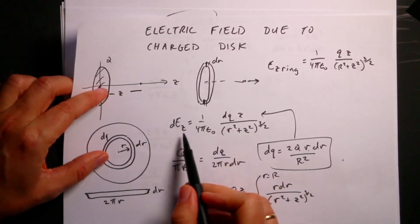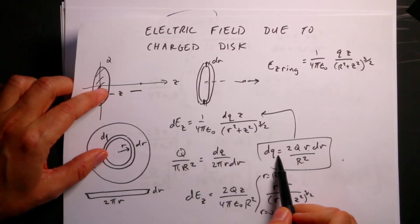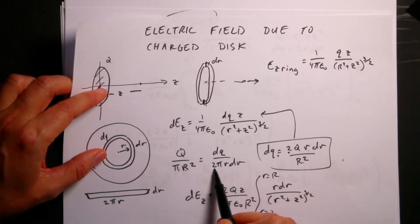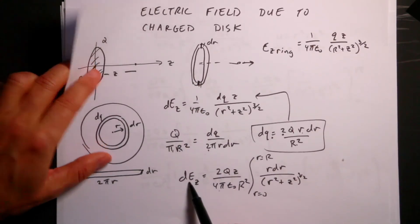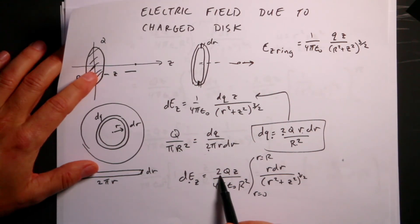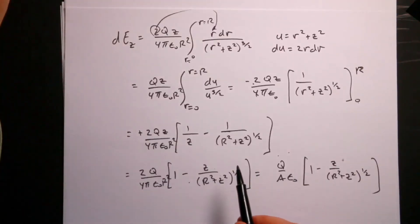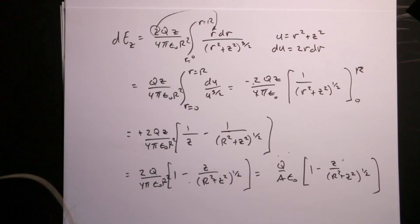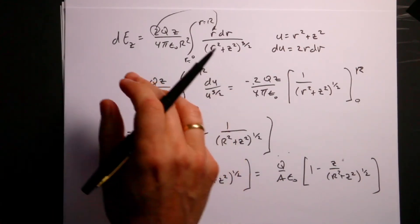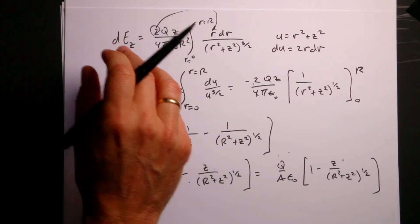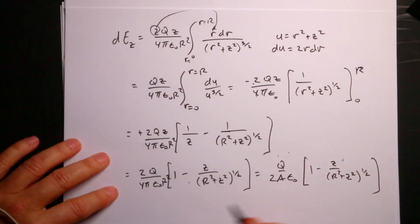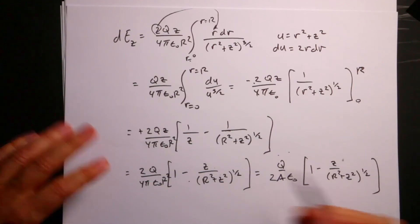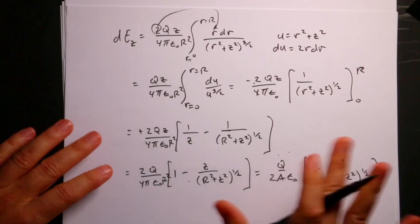Let's just check the factor of two. That two came from this two in the DEz expression, which came from the 2r·dr in the DQ derivation. I brought it over into the integral and then got another two from the integration — so there should be a two there. I didn't make a mistake; I made a mistake when I wrote down my answer to check at the end. So that is a two. That's the electric field due to a disk.